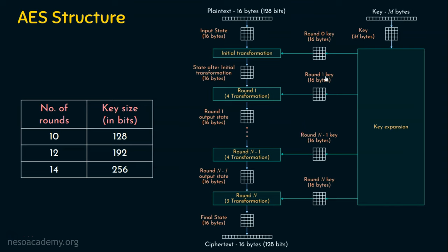We are going to provide only one key — this key may be a 128-bit key, a 192-bit key, or a 256-bit key. Based on the key size, the number of rounds varies. We have 10 rounds for 128-bit, 12 rounds for 192-bit, and 14 rounds for 256-bit. Additionally, there is an extra round key for the pre-round. So AES-128 needs 11 round keys, AES-192 needs 13, and AES-256 needs 15 round keys.